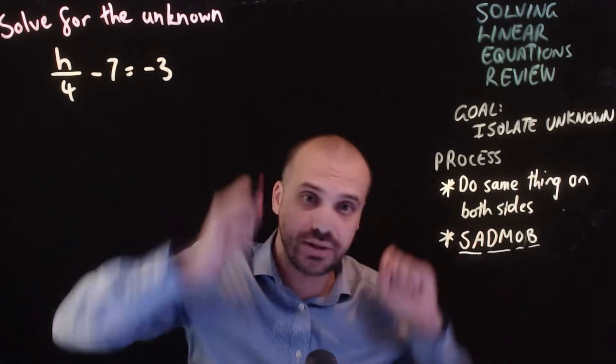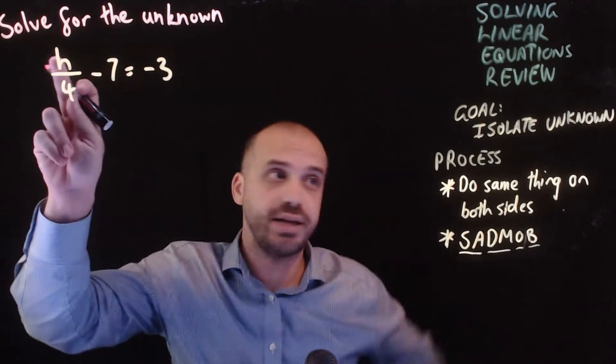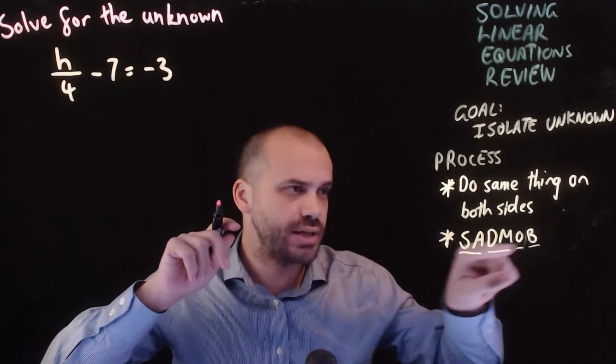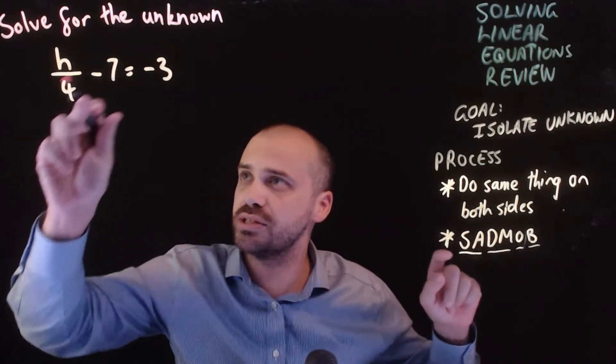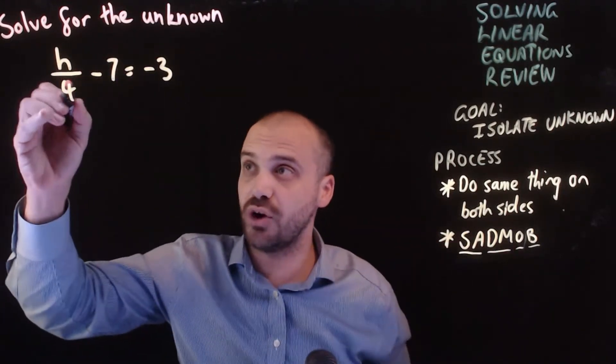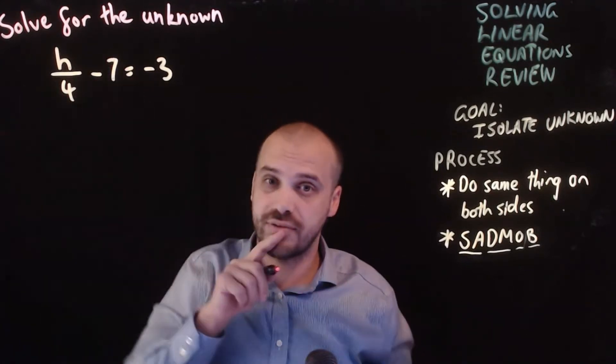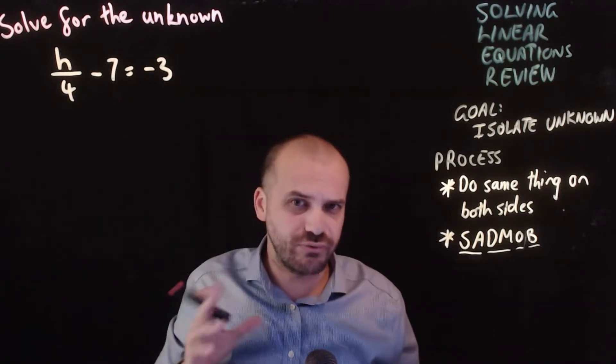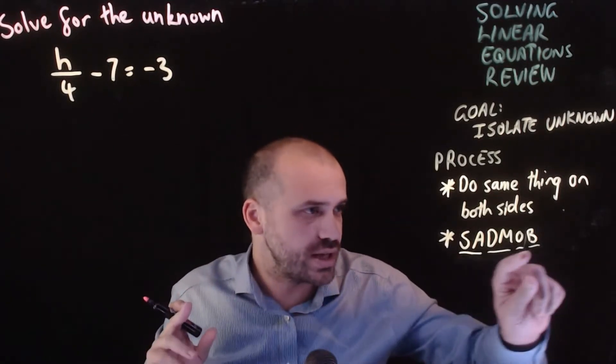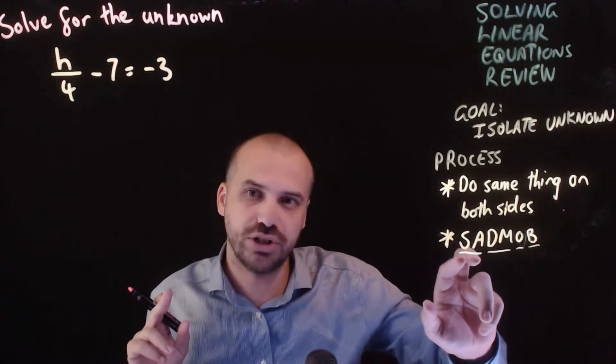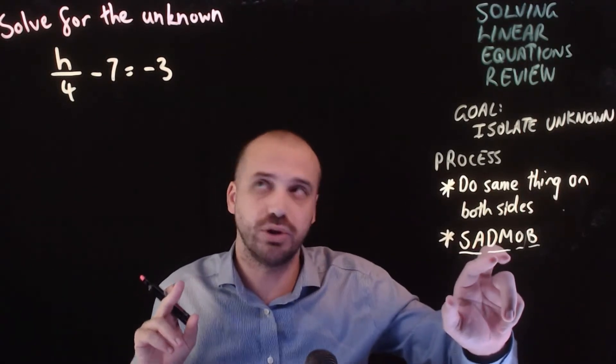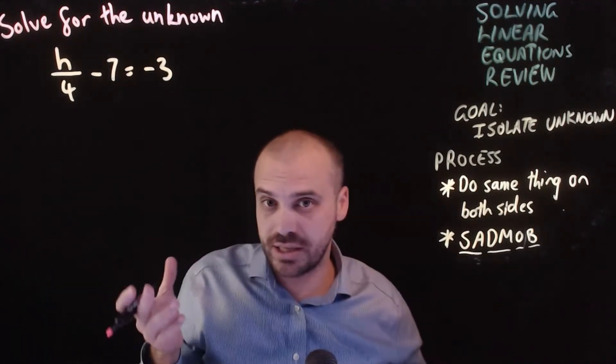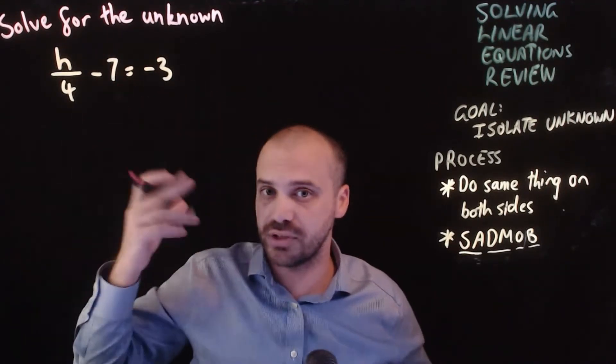So jumping through this question using this process. We want h to be by itself, right? That's what we want to do. We want to isolate the unknown. Now, SadMob. There are two things that are in the way. There's a divide by 4 and there's a subtract 7. And I need to get rid of both of those things. Which one should I get rid of first? According to my SadMob here, I should do subtraction and addition before I do division and multiplication. Which means that I should get rid of this negative 7. And the way to get rid of a negative 7 is by adding 7 to both sides.